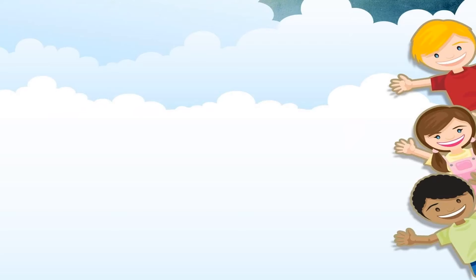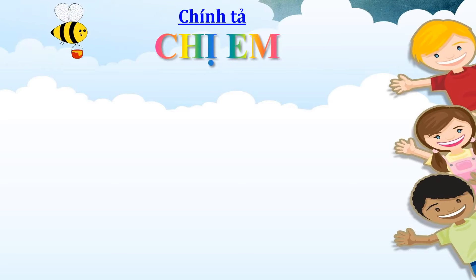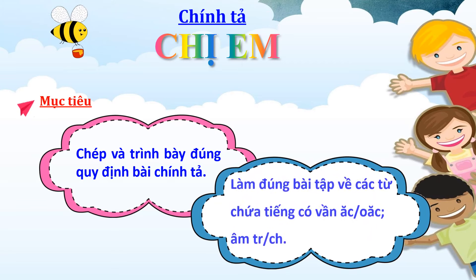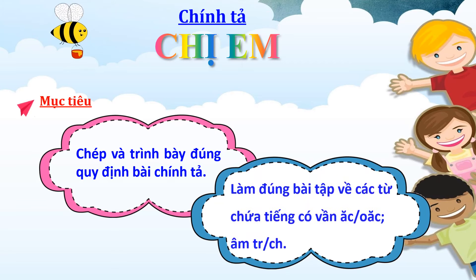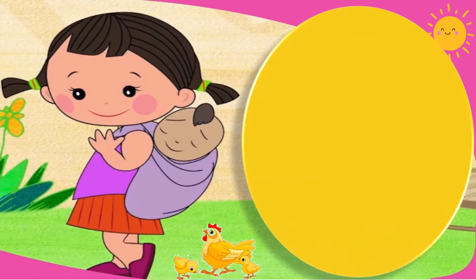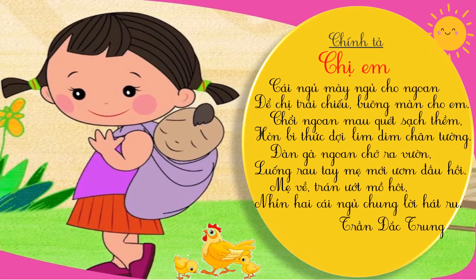Cô chào tất cả các em. Hôm nay, cô và các em sẽ cùng tìm hiểu bài chính tả tập chép 'Chị Em'. Mục tiêu bài học hôm nay là: chép và trình bày đúng quy định bài chính tả; làm đúng bài tập về các từ chứa tiếng có vần ắc hay ặc và âm đầu tr hay ch. Các em hãy cùng mở sách tiếng Việt lớp 3 tập 1 trang 27 hoặc theo dõi trên màn hình của cô và lắng nghe cô đọc bài chính tả.